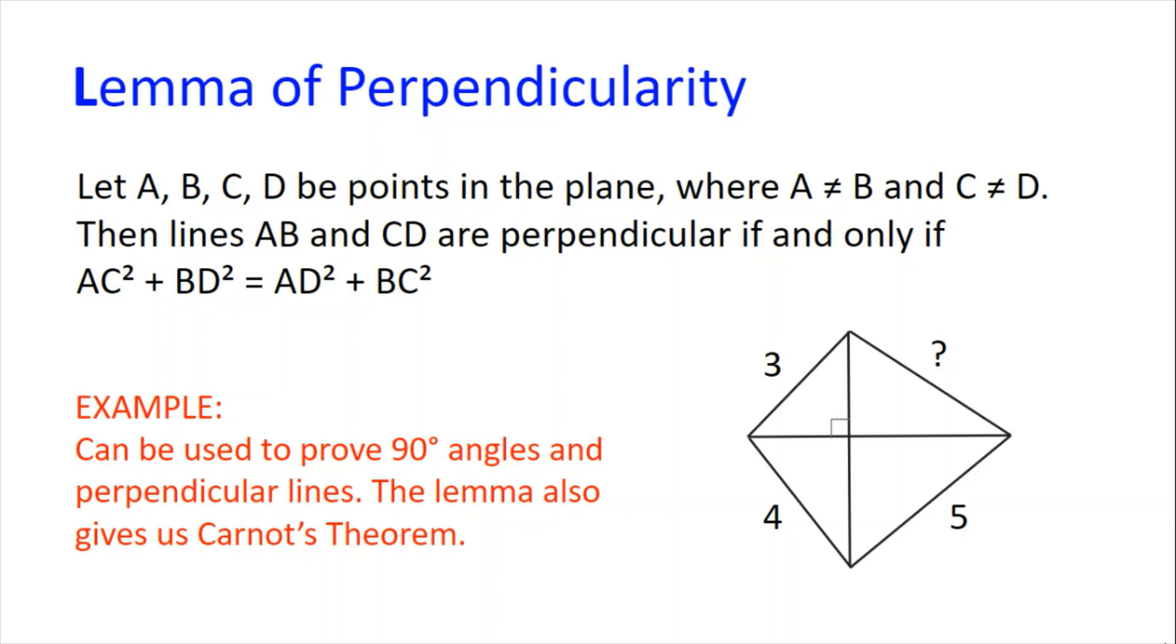we have L for the useful Lemma of Perpendicularity. This says that if A, B, C and D are points on the plane where A is not B and C is not D, lines AB and CD are perpendicular if and only if AC squared plus BD squared is equal to AD squared plus BC squared.